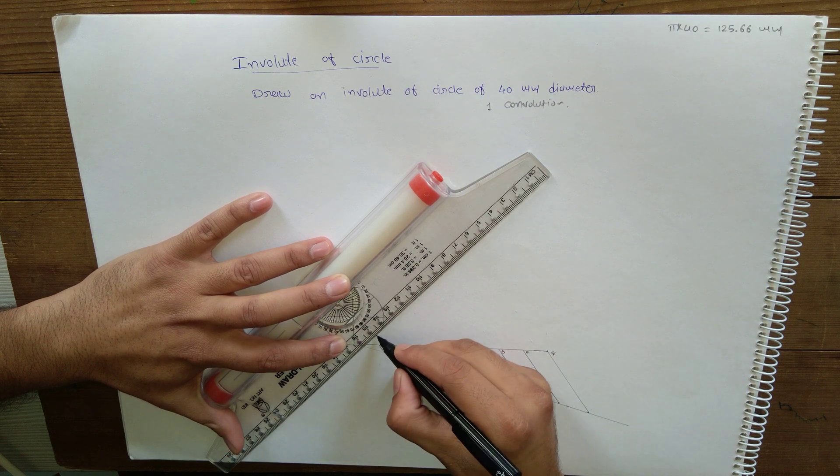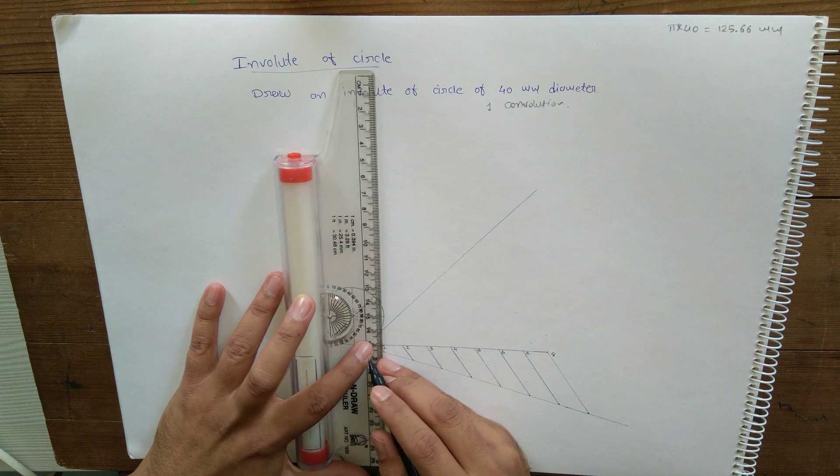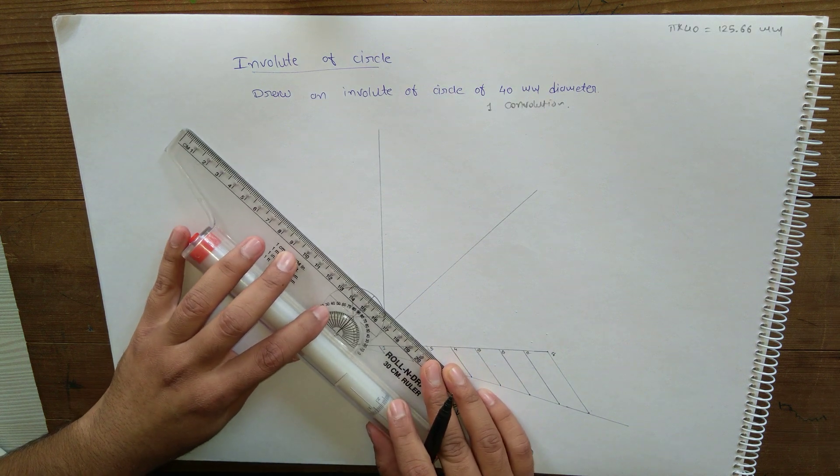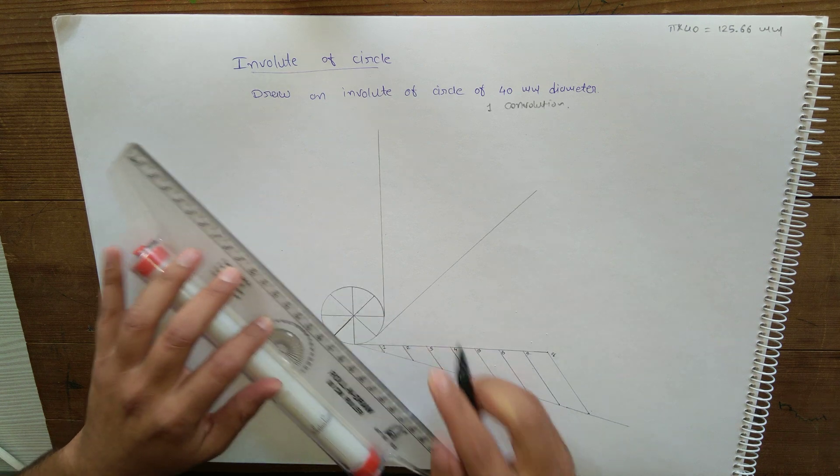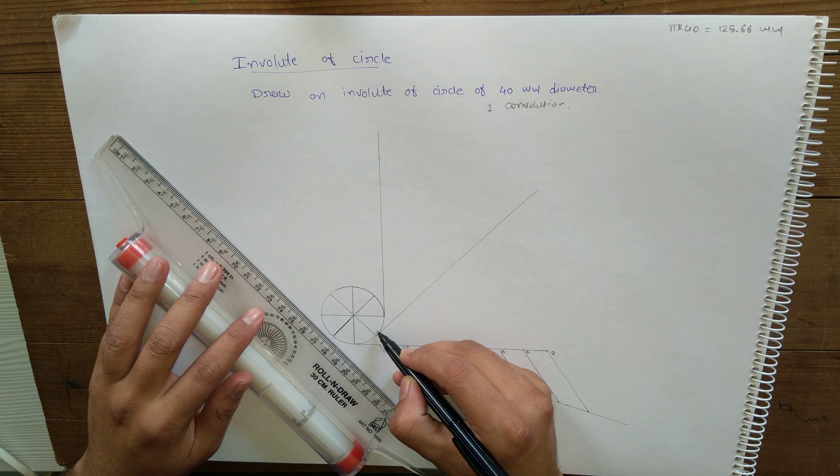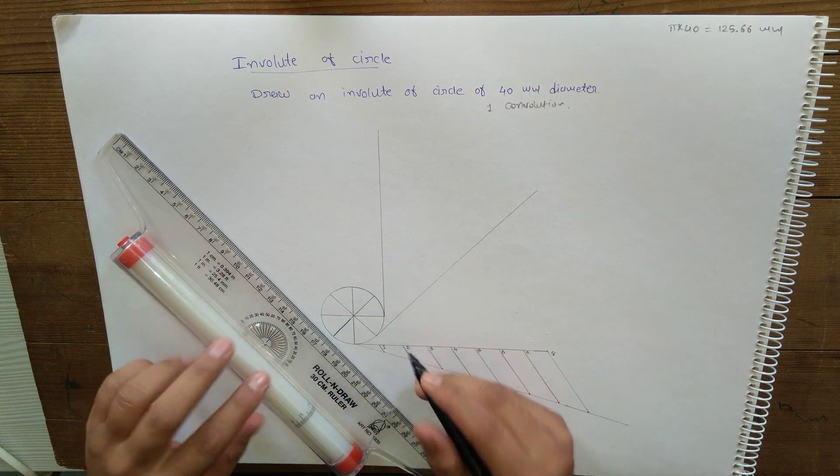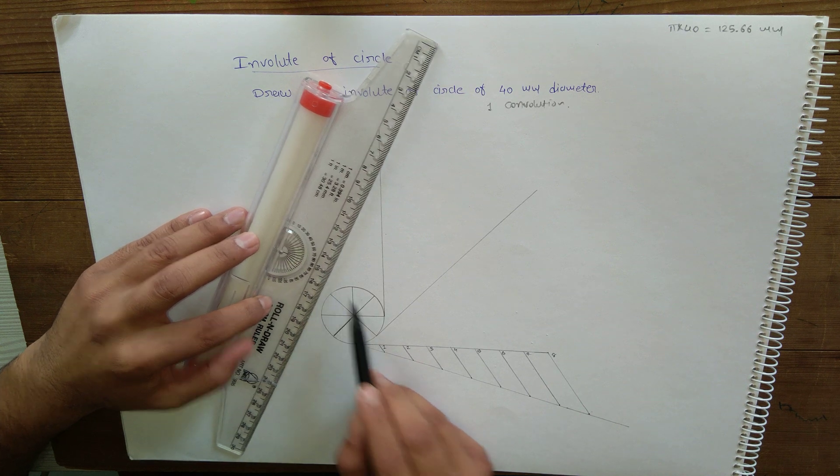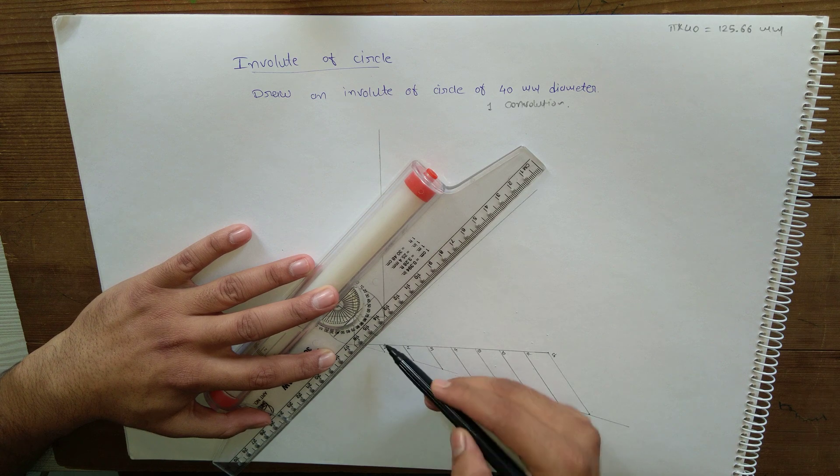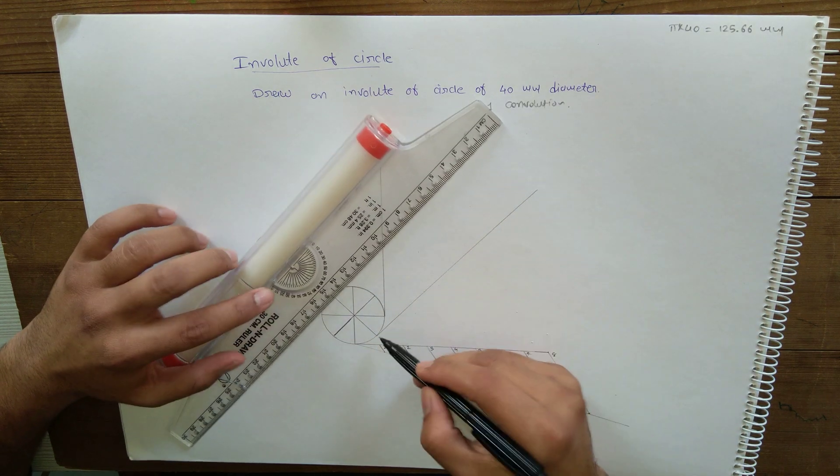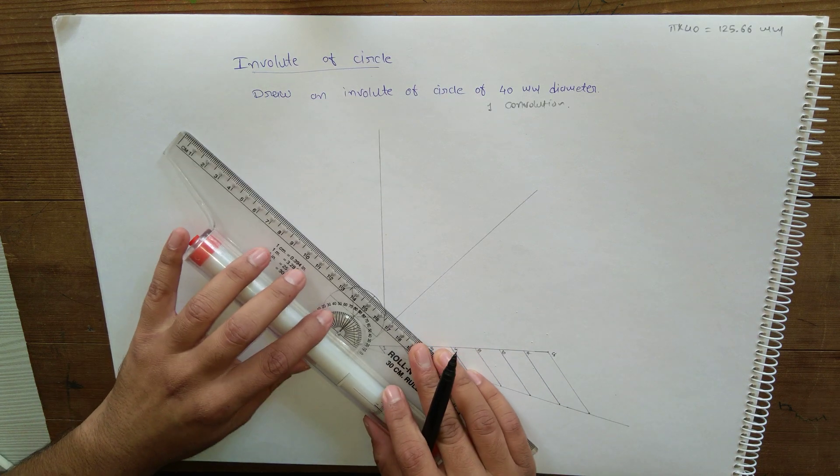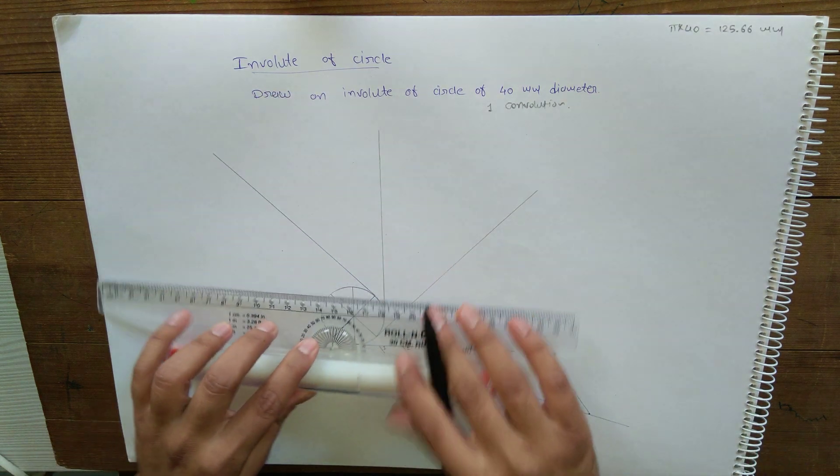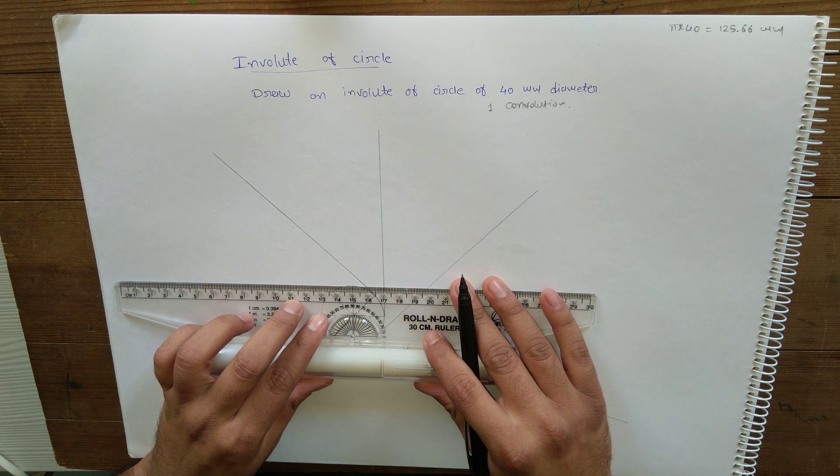To draw tangents I am ensuring tangents are exactly perpendicular to the radius. So for that what I am doing, I am aligning this line of 90 or this division 15 with radius and I am drawing a line which is exactly at 90 degrees. So every time you need not measure angle of 90 degrees, you can simply do with the help of this roller scale.